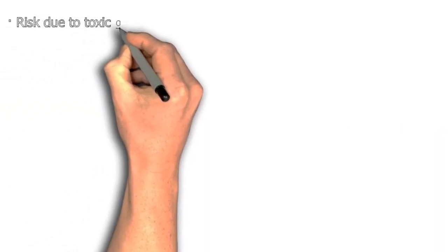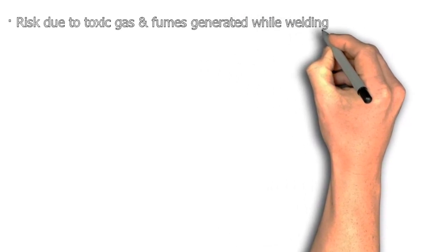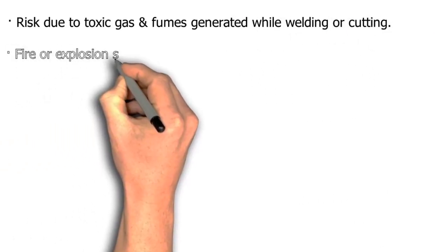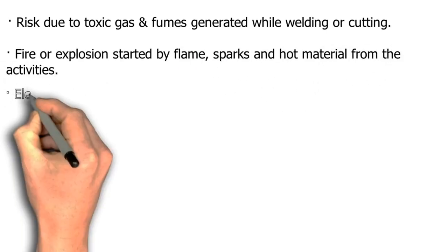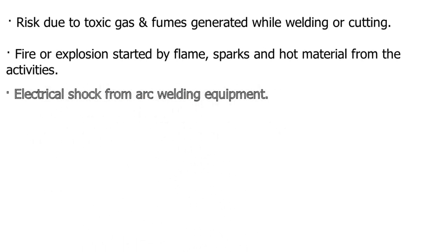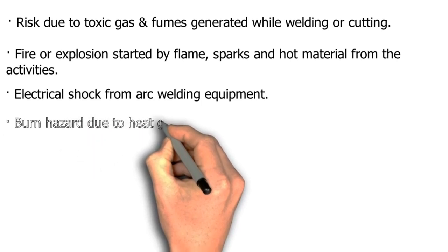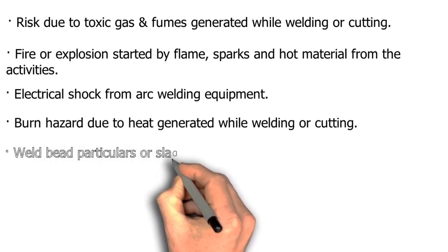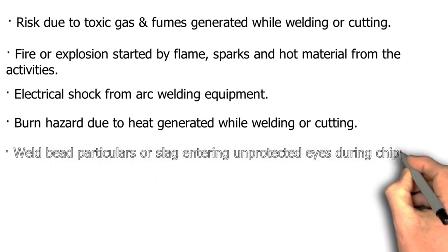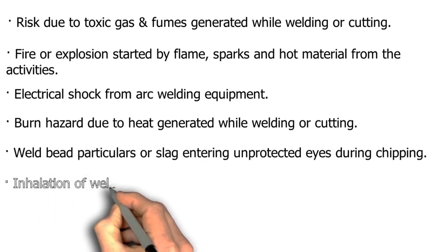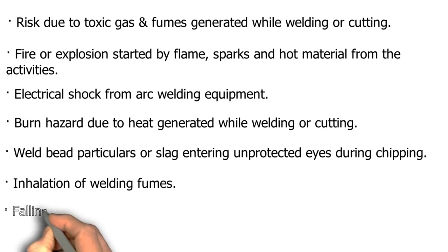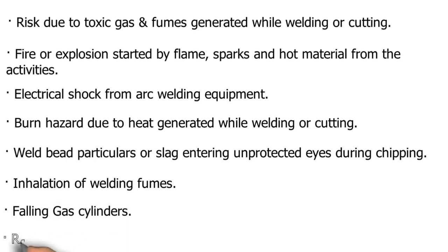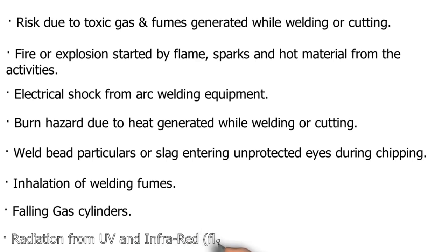What are the welding and cutting hazards? Risk due to toxic gases and fumes generated while welding or cutting; fire or explosion started by flame, sparks and hot material from the activities; electrical shock from arc welding equipment; burn hazard due to heat generated; weld bead particles or slag entering unprotected eyes during chipping; inhalation of welding fumes; falling gas cylinders; radiation from UV and infrared causing flash eye.